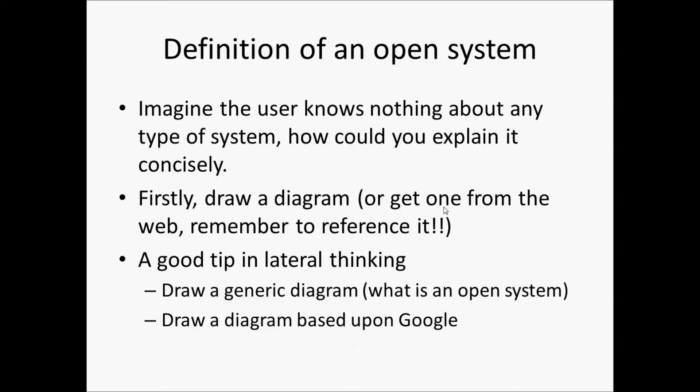The first thing you should do is define an open system - imagine that the reader knows absolutely nothing about open systems, closed systems, or any kind of system. I would say you should either draw a diagram or find one from the web, but if you're taking it from the web, you need to reference it properly. You'll need a different referencing structure at degree level, but the way I showed you last time is pretty good.